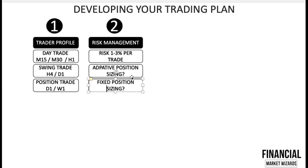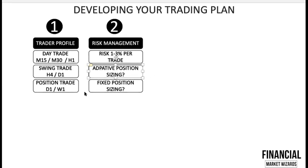Fixed position sizing means trading the same size every trade, for example 0.1 lots on every trade. We don't really recommend this because if you have a trade with a wide hundred-pip stop loss and you're trading 0.1, it can damage your account quite badly. Fixed sizing can grow your account faster, but for beginners we still recommend adaptive position sizing. Check out our other video on how to position size your trades.